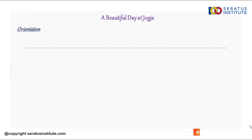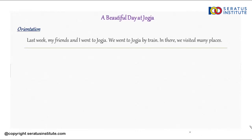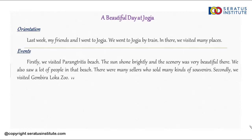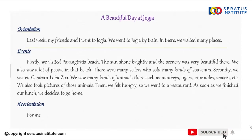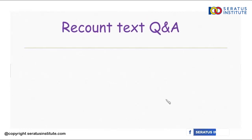This is the example of recount text: 'A beautiful day at Jogja.' As we can see, the first paragraph is the orientation. The second is events — di sini kita menceritakan pengalaman sesuai dengan urutan kejadian (here we tell the experience in order of events). We can use adverbs like firstly, secondly, thirdly. And then the last paragraph is reorientation, the ending of the story, where the writer describes their experience or feelings at that time.